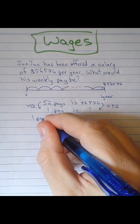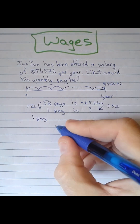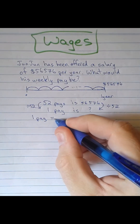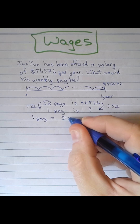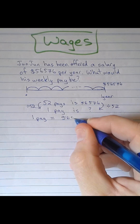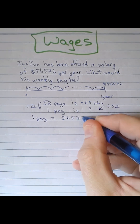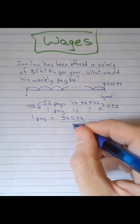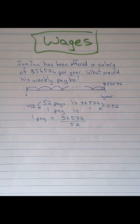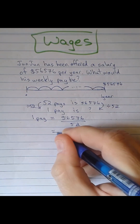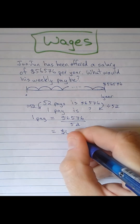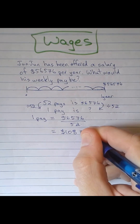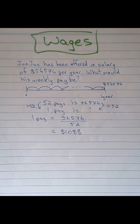So one week of pay is equal to $56,576 divided by 52, which is equal to $1,088.